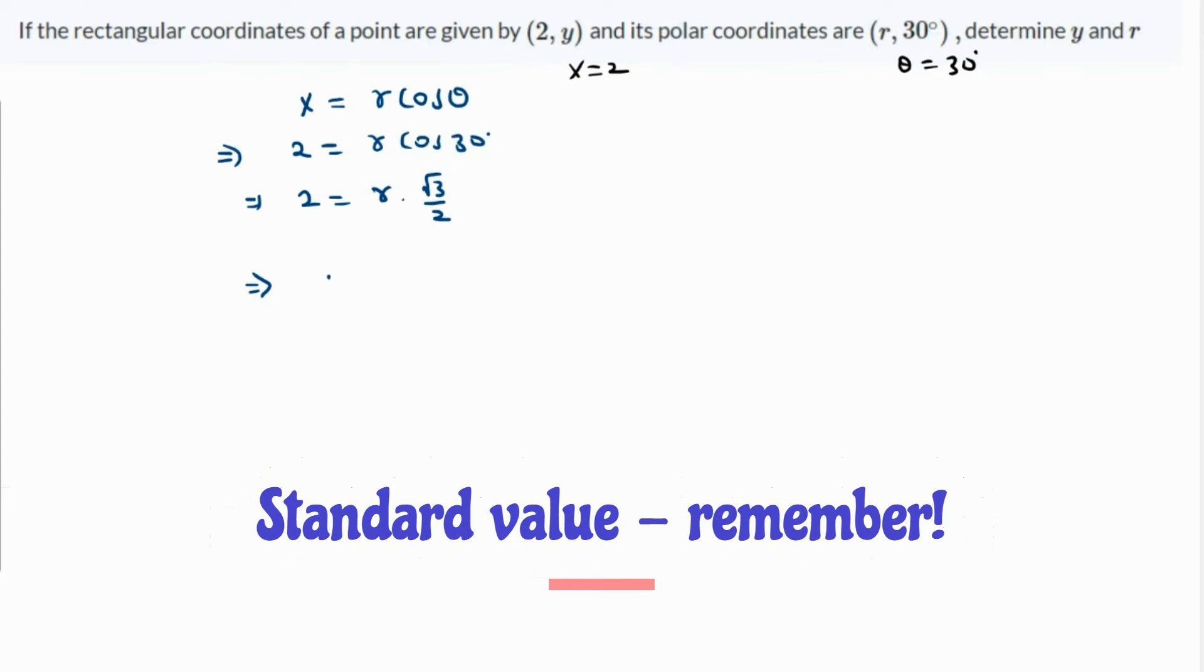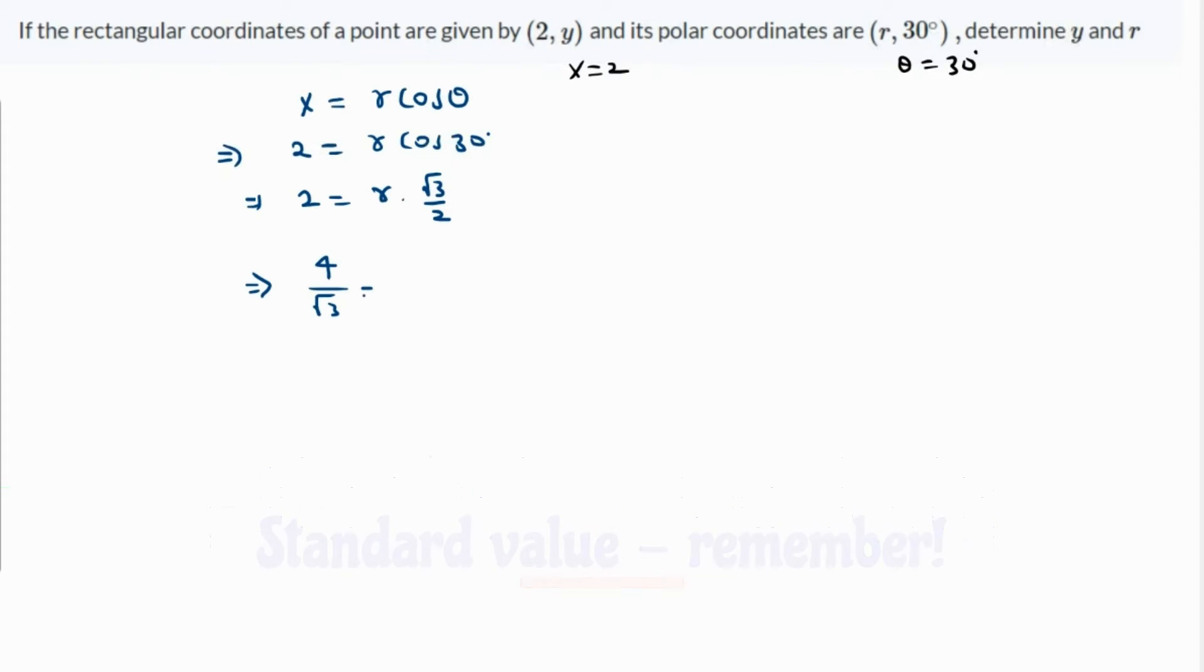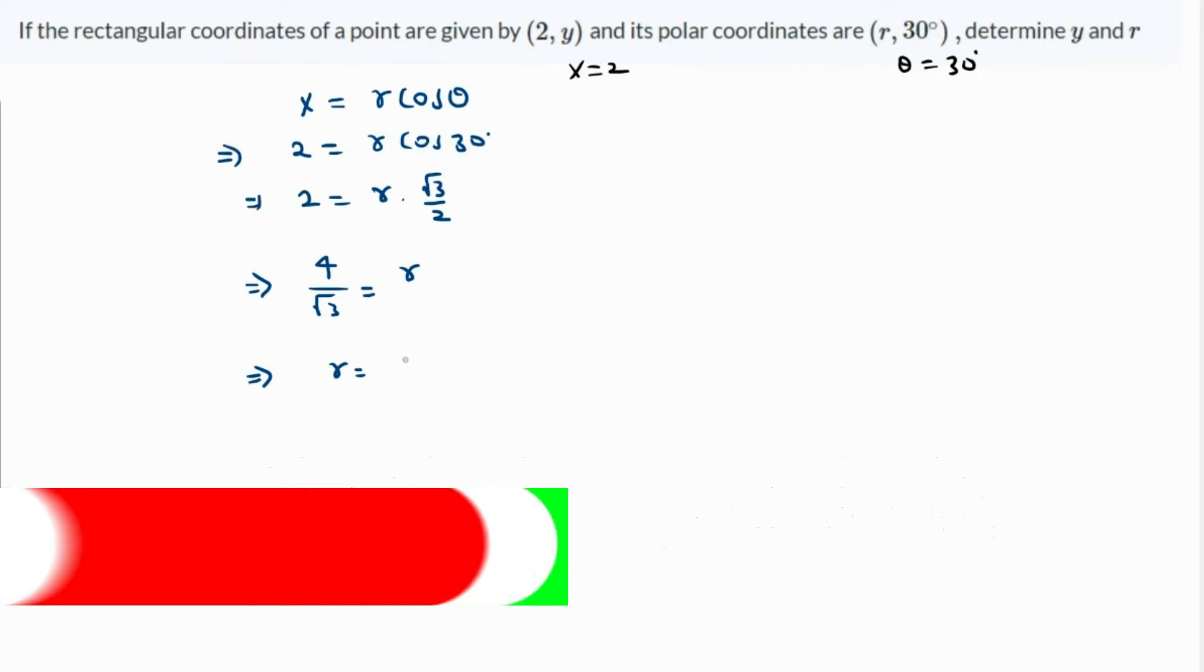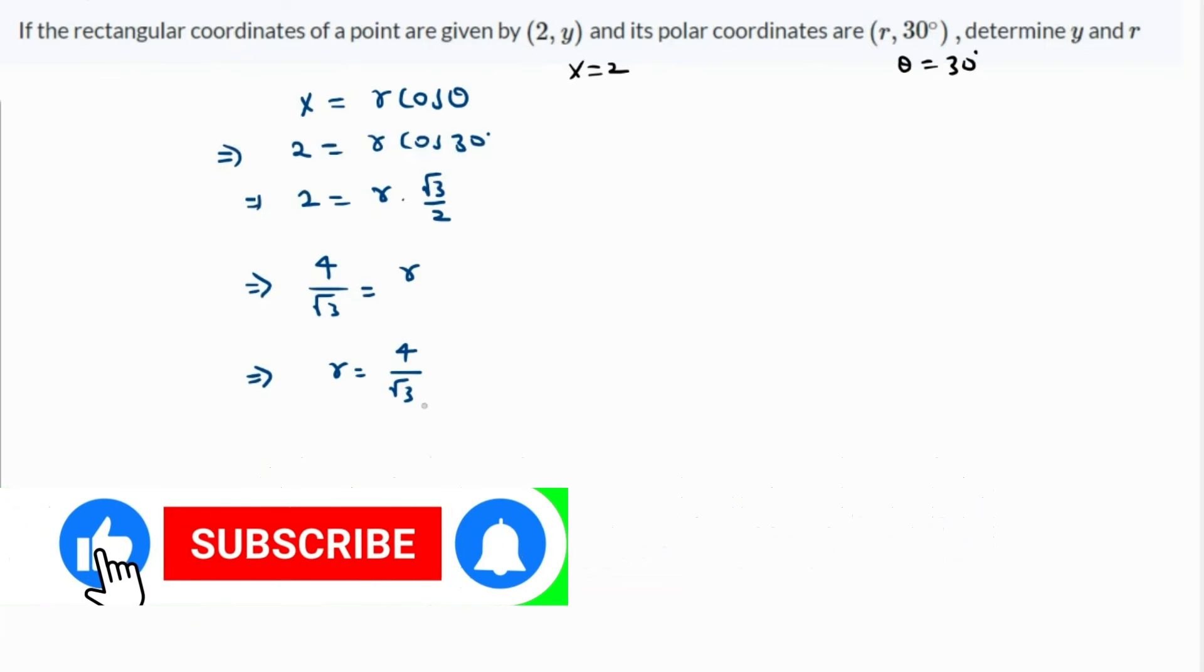Multiplying both sides by 2, we have 4, and dividing both sides by √3, we have √3 over here as r. So if we flip the equation, the value of r is 4 over √3.